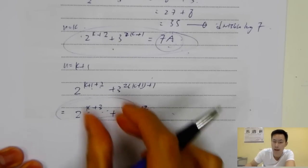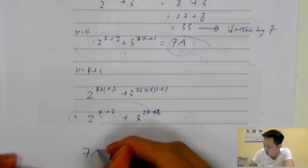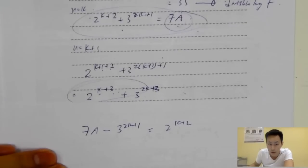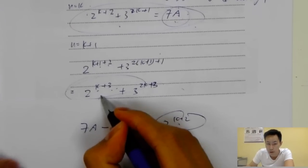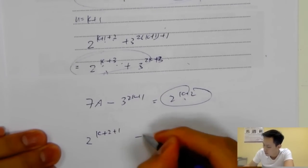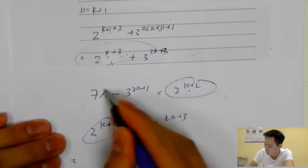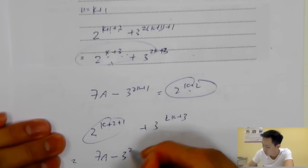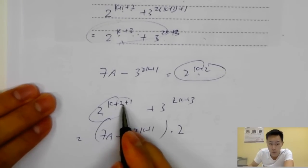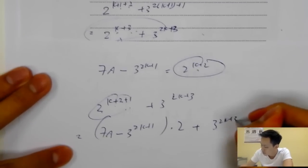We want to take out seven as a factor. We know that 7A minus 3^(2K+1) equals 2^(2K+1). Substituting back, 2^(2K+3) becomes 2^(2K+1) times two. So we replace 2^(2K+1) with 7A minus 3^(2K+1), then multiply the whole thing by two, giving 14A minus 3^(2K+1) times two, plus 3^(K+3).